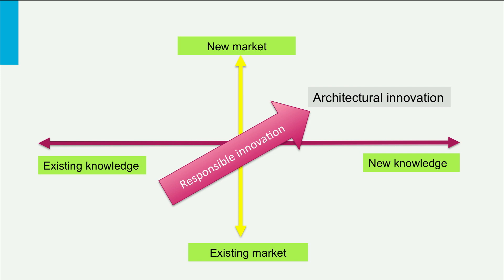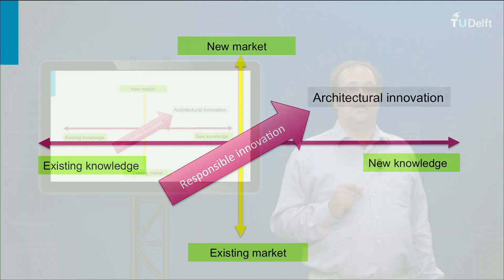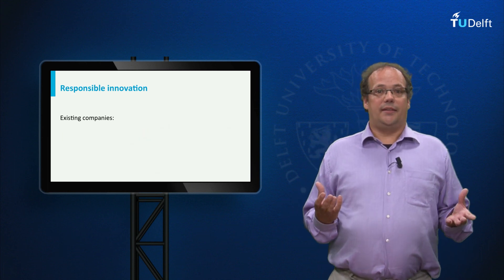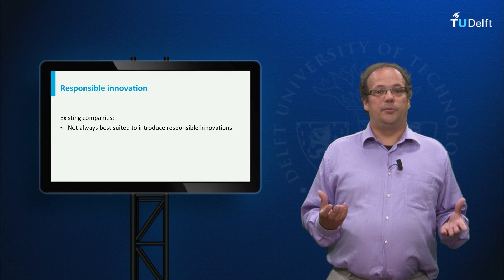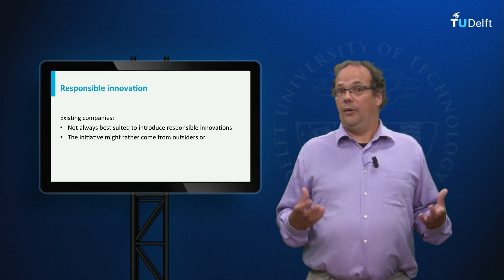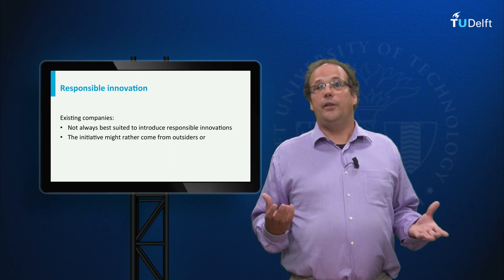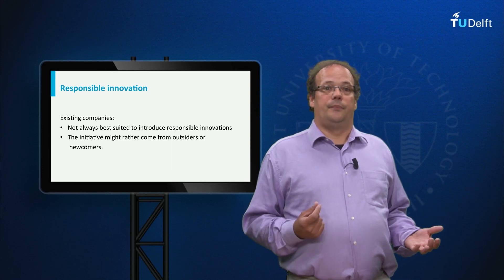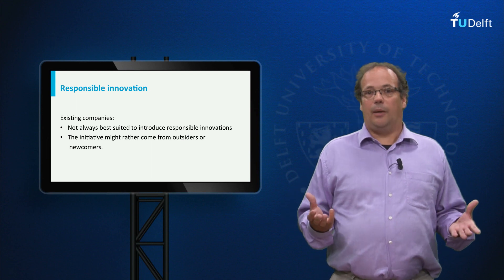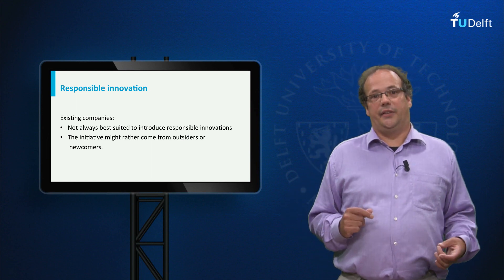Taken together, this suggests that responsible innovation will often be like what we have called architectural innovation. Of course, to see whether this is really the case, more empirical research is needed. But if it were so, it would have some interesting implications. One is that existing companies are not always best suited to introduce responsible innovation; instead, the initiatives might come from outsiders or newcomers. We will see some of these implications and examples in the fourth web lecture of this week.